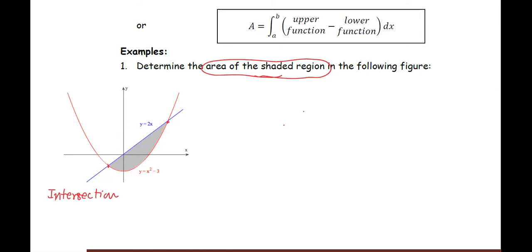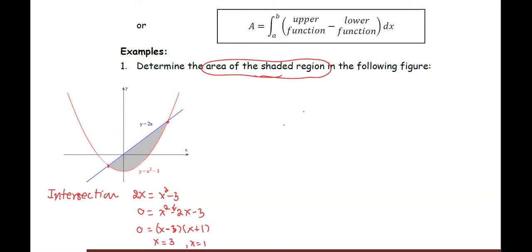To find the intersection points, think about when the two curves meet each other — they equal each other. So set the two functions equal: 2x equals x squared minus 3, then solve for x. Move all terms to one side and solve the quadratic equation by factoring. We get x times x for x squared, and with negative 3, we factor as (x minus 3)(x plus 1). This gives us x equals 3 and x equals negative 1 as the two intersection points.